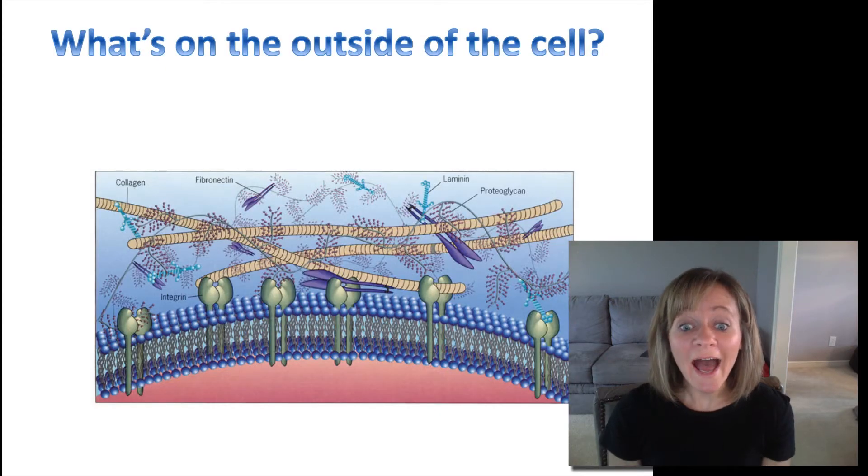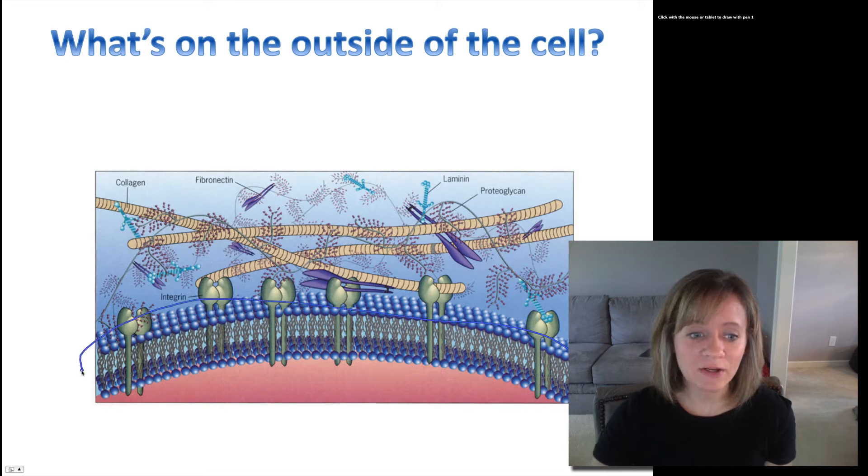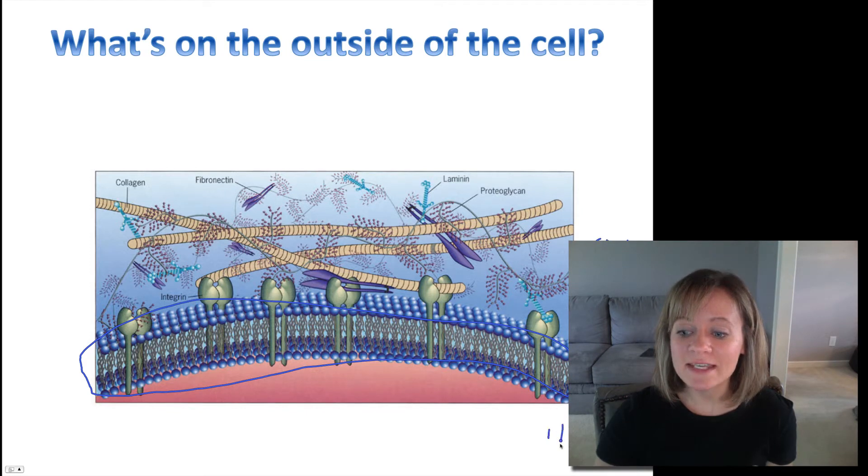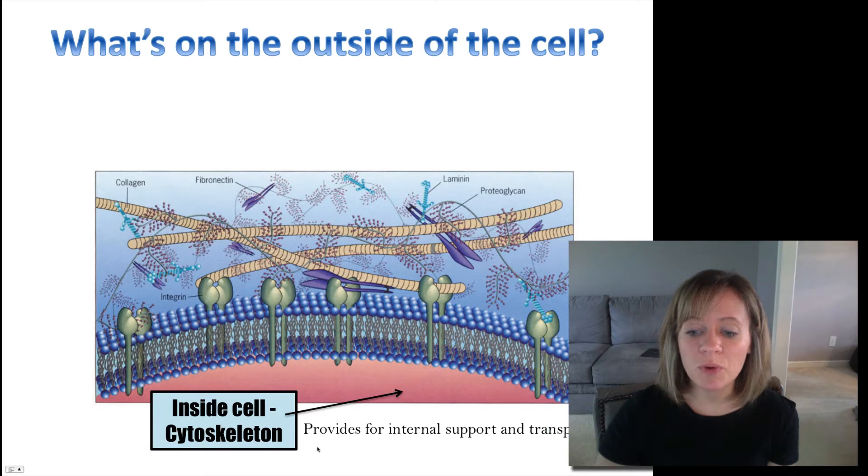So first let's take a look at the picture of the cell membrane and what's on the inside and what's on the outside of the cell. So here is our phospholipid bilayer. This is our plasma membrane. This is the outside of the cell and this is the inside of the cell. The inside of the cell has something called a cytoskeleton. This simply provides internal support and it's also sort of like a transport system so that proteins and vesicles can get to where they need to go.